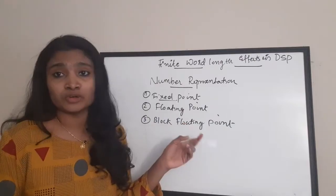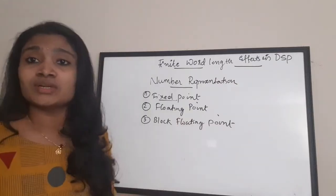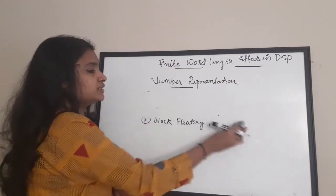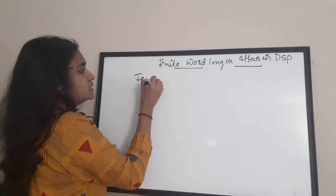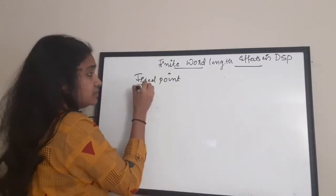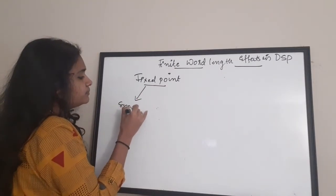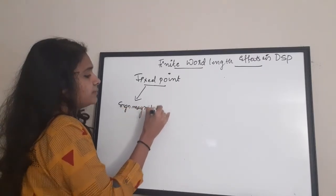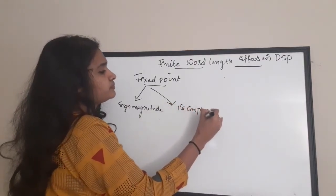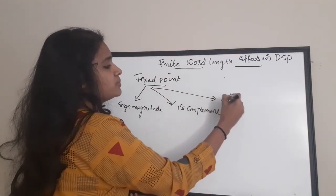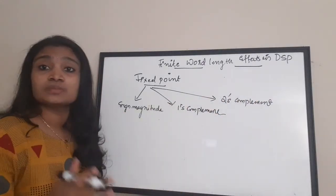We have to mainly discuss about fixed point and floating point. Fixed point number representation consists of mainly three types: first one is sign magnitude type, second one is one's complement, and third one is two's complement representation. These are the three categories of fixed point number representation.